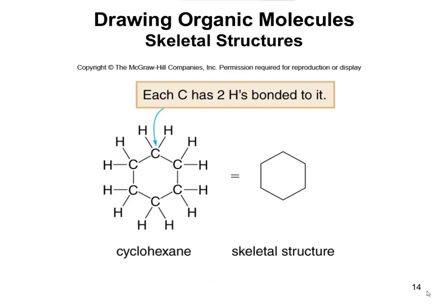The skeletal structure basically takes out all of the individual bond lines between the carbons and the hydrogens, and you assume that they're there. You also take out all the letters, and we assume that at the junction of any two lines there's going to be a carbon, and that there are enough hydrogens attached to each carbon to give it a total of four bonds. So at a junction that's going to be a carbon — that carbon has two lines coming from it, so that's two bonds, and it would have two extra bonds which would be the hydrogens.